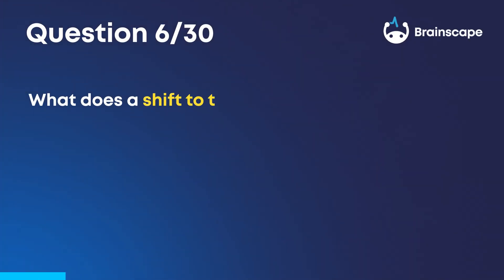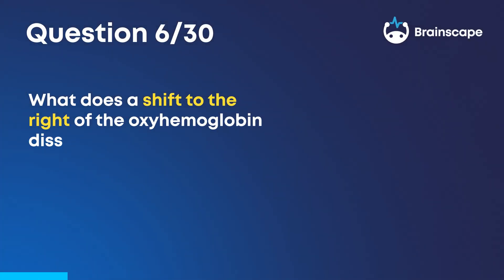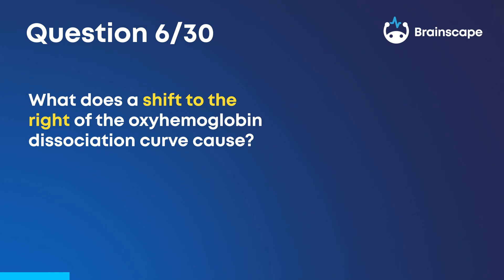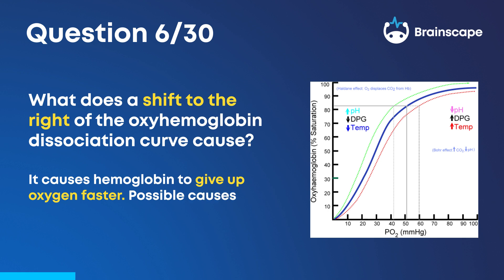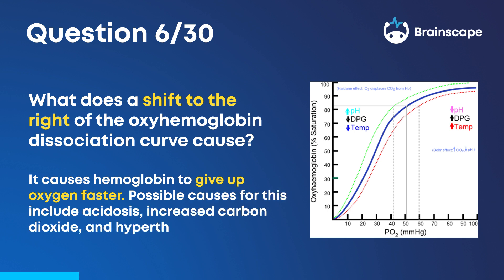Question 6. What does a shift to the right of the oxyhemoglobin dissociation curve cause? It causes hemoglobin to give up oxygen faster. Possible causes for this include acidosis, increased carbon dioxide, and hyperthermia.